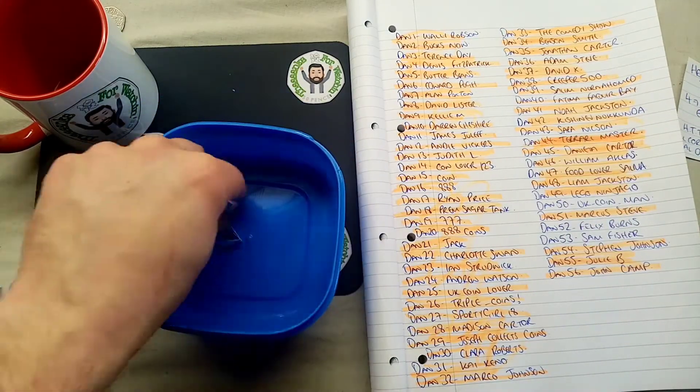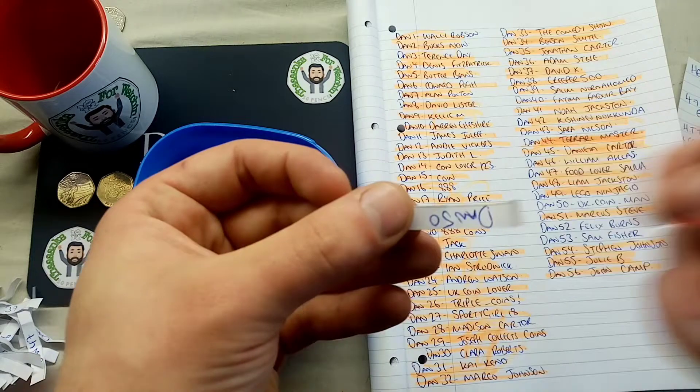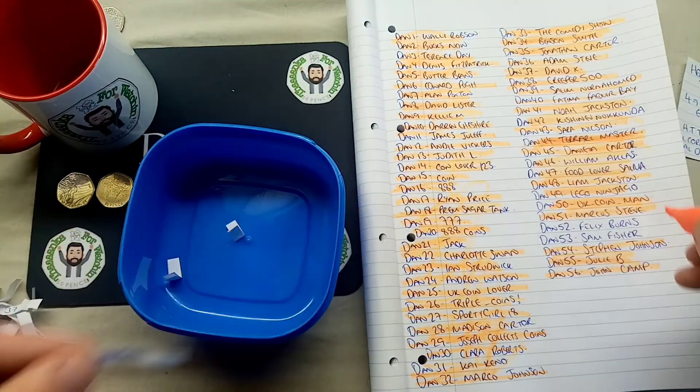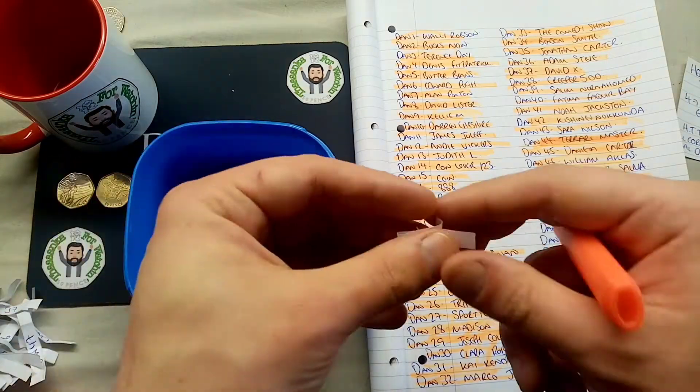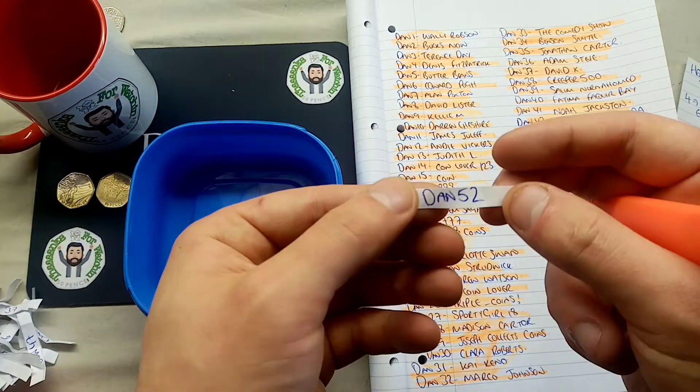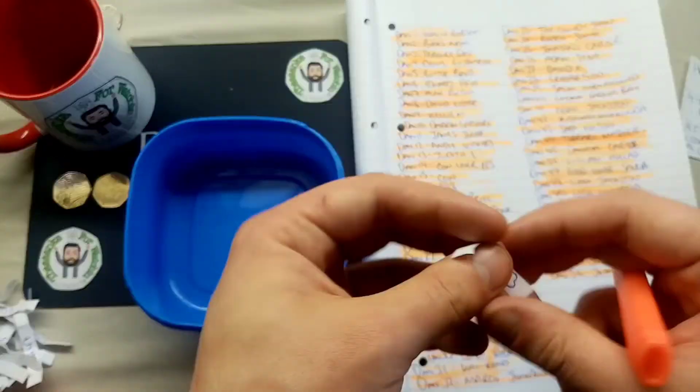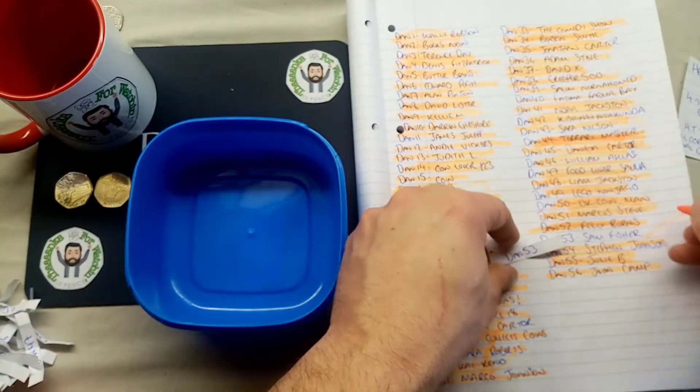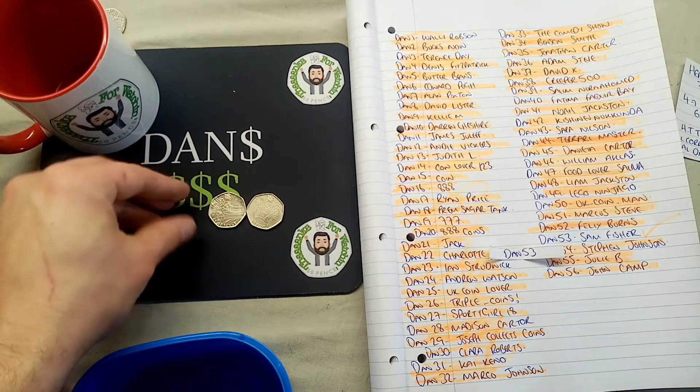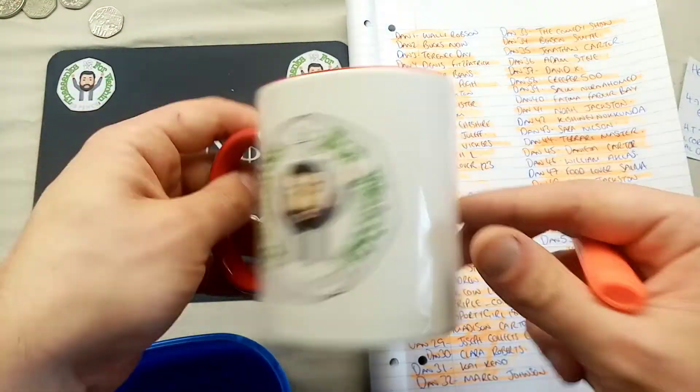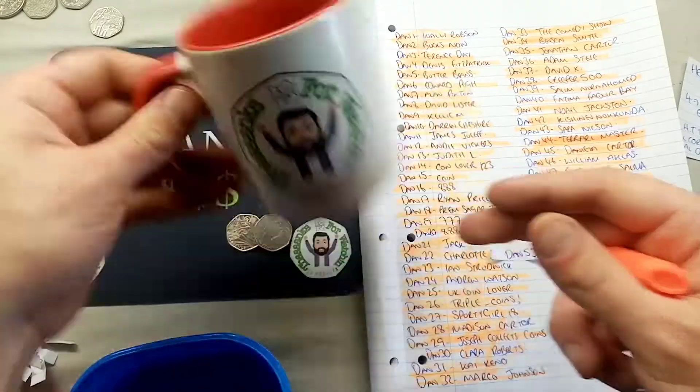We move on to the final three then. In third place we've got Dan number 50. Which is going to be the end there of UK Coinman. And it's Felix Verne versus Sam Fisher. 52 is out next. Unfortunately Felix that's the end of your run. So 53 the overall leader. The winner of the mug and the two Olympics. It's Sam Fisher. Another one of these games will be up soon. And as always guys thanks for watching.